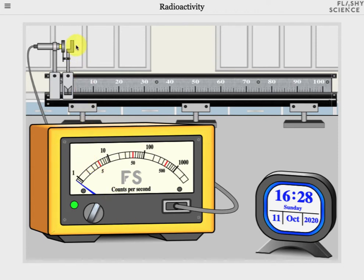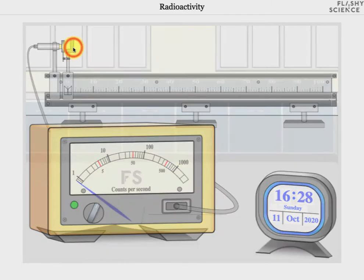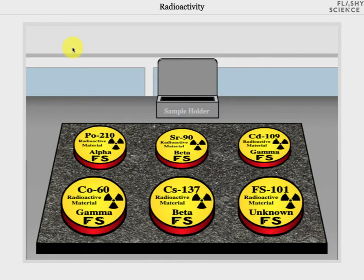To add a radioactive source click on this region of the mount assembly. This moves you to a new screen where there are six different radioactive sources available.